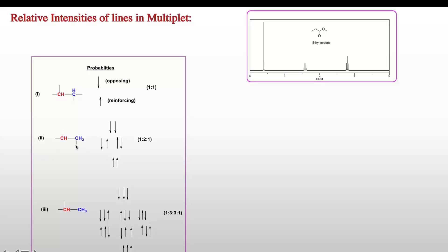If there are two protons splitting a signal into a triplet, the two protons can both oppose, both align, or one oppose and one align — the mixed case has two possibilities, giving a 1:2:1 ratio for a triplet. For three protons producing a quartet, considering all combinations gives a 1:3:3:1 ratio for the quartet peaks.